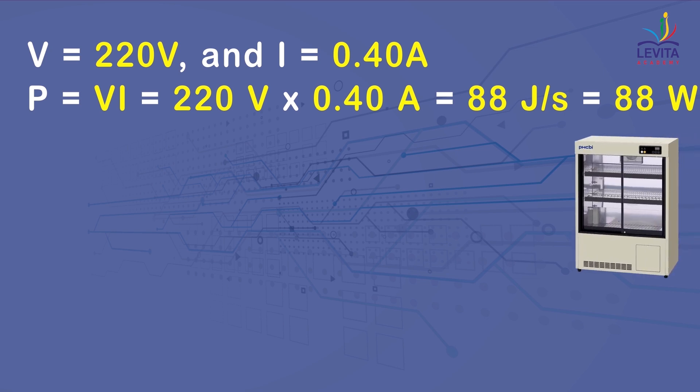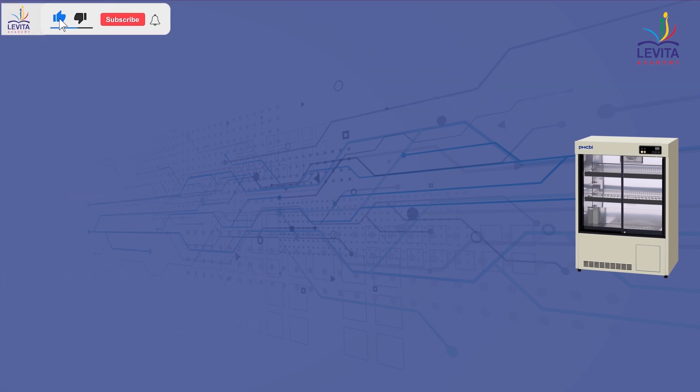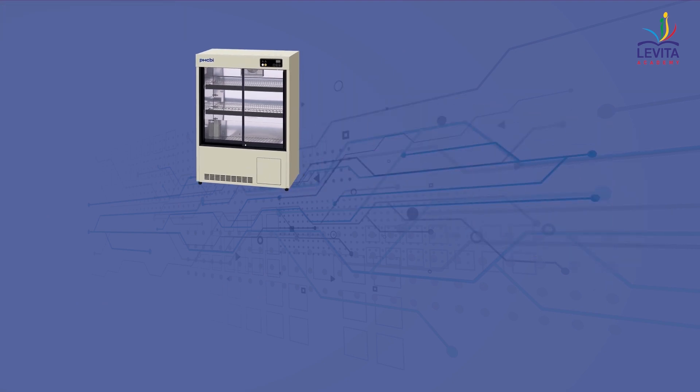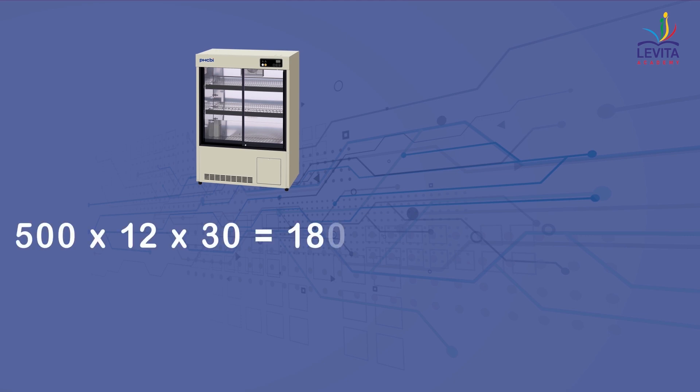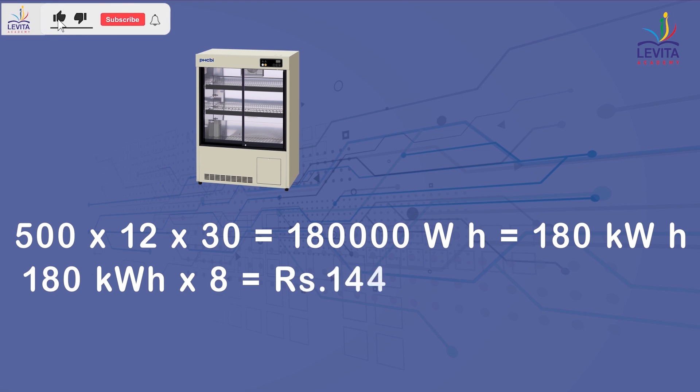Let us look at one more example. An electric refrigerator rated 500 watt operates 12 hours a day. What is the cost of the energy to operate it for 30 days at rupees 8 per kilowatt hour? Now, here the total energy consumed by the refrigerator in 30 days would be 500 × 12 × 30 that is equal to 180,000 watt hour. That is equal to 180 kilowatt hour. So, the cost of operation at 8 rupees per unit will be 180 kWh × 8. That is equal to rupees 1440.